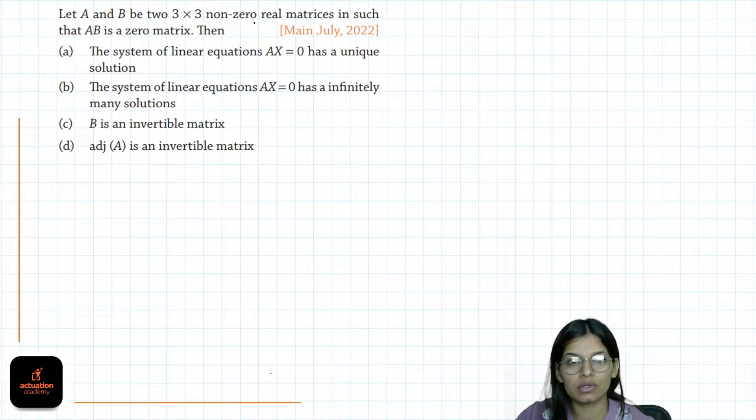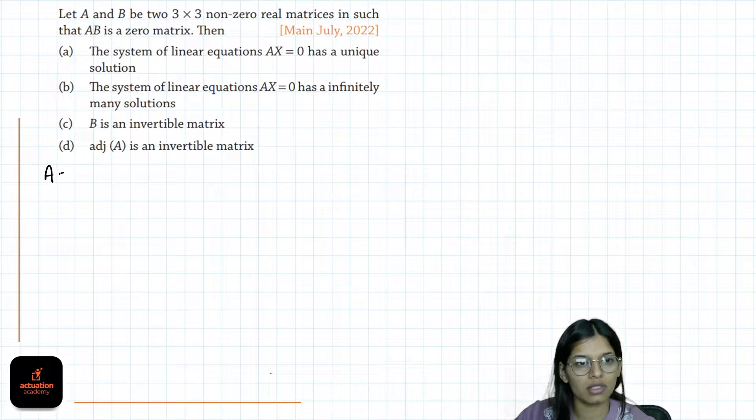Let A and B be two 3×3 non-zero real matrices such that AB is a zero matrix. We have to comment on these statements.